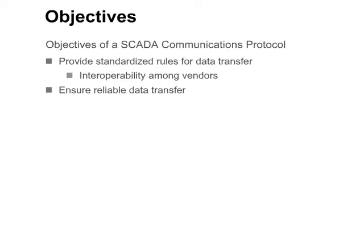The protocol should ensure reliable data transfer. This is often accomplished via cyclic redundancy check, or CRC, or by a checksum to detect and possibly correct errors that are introduced during transmission, for example by noise on the line.